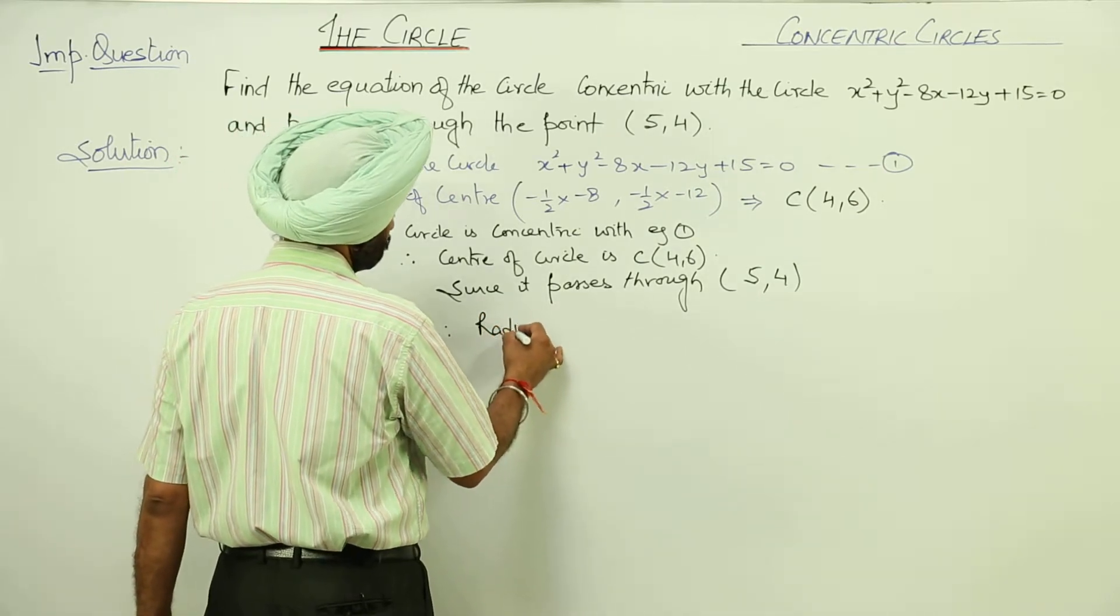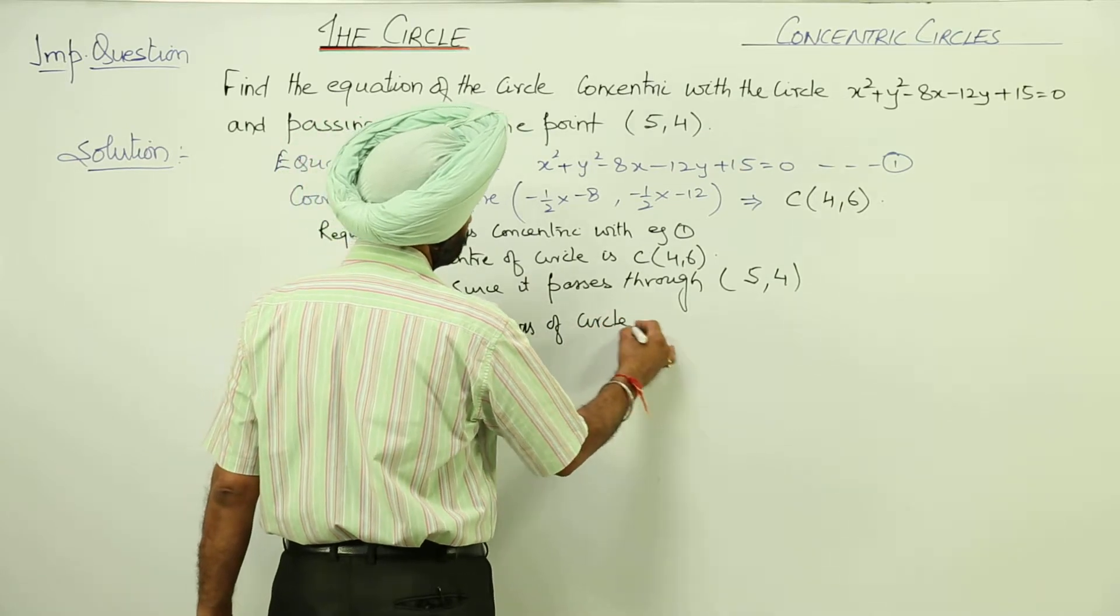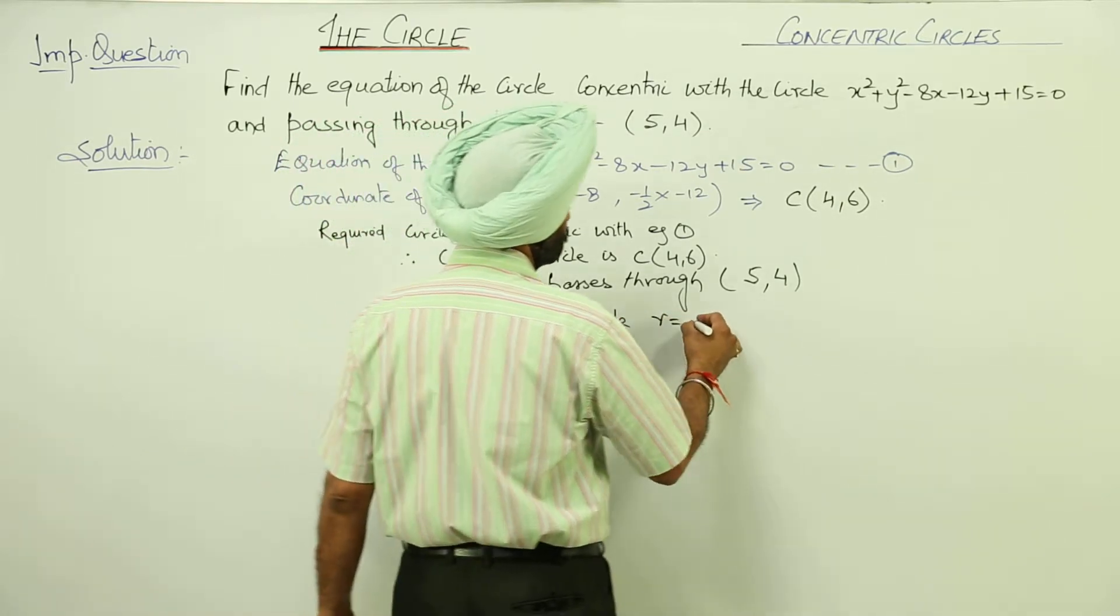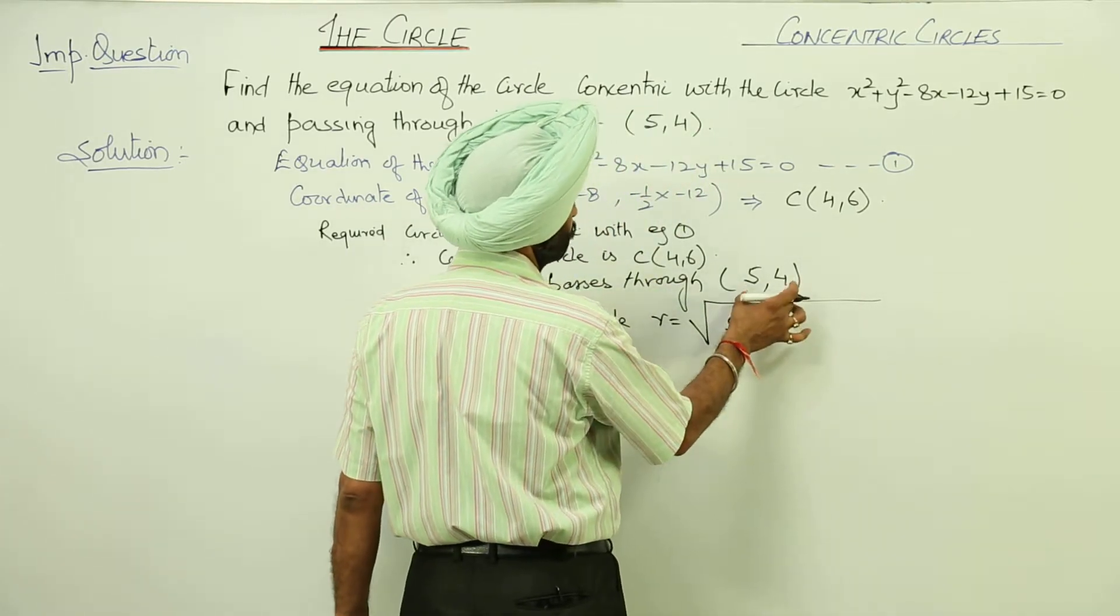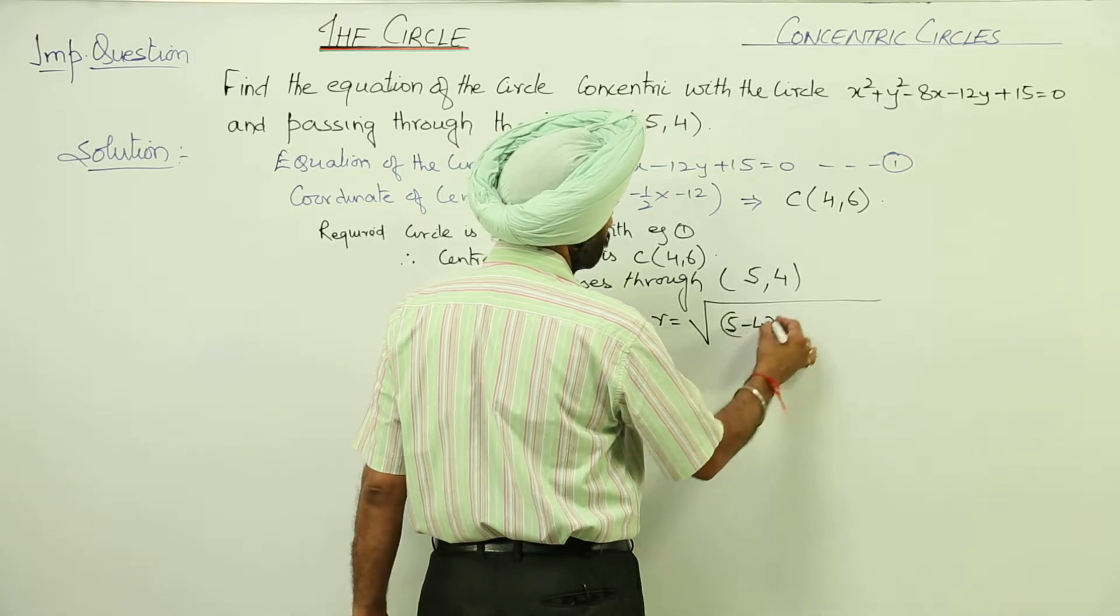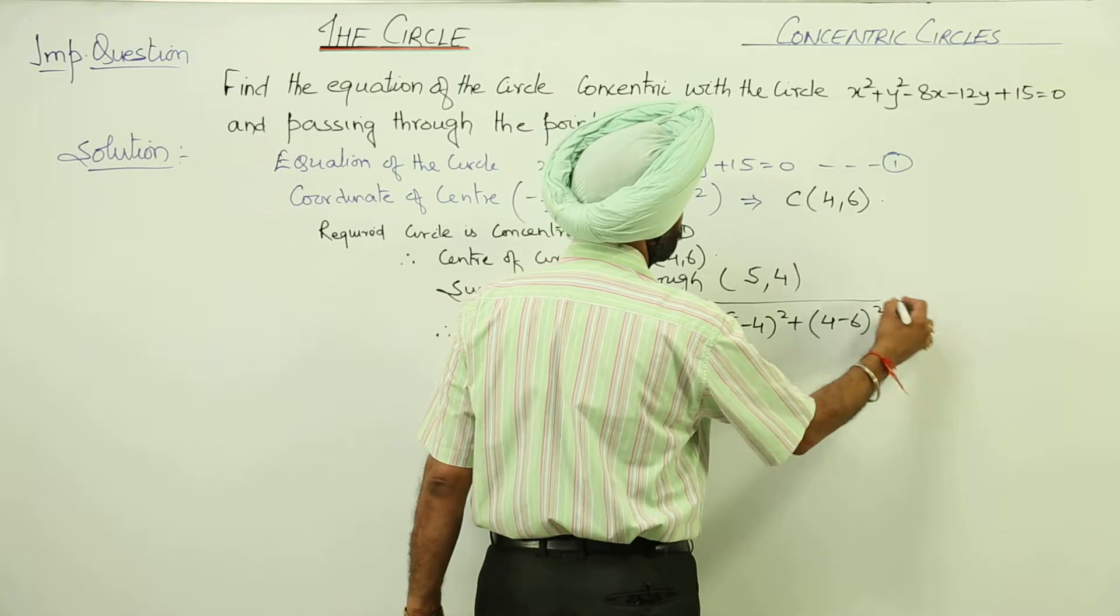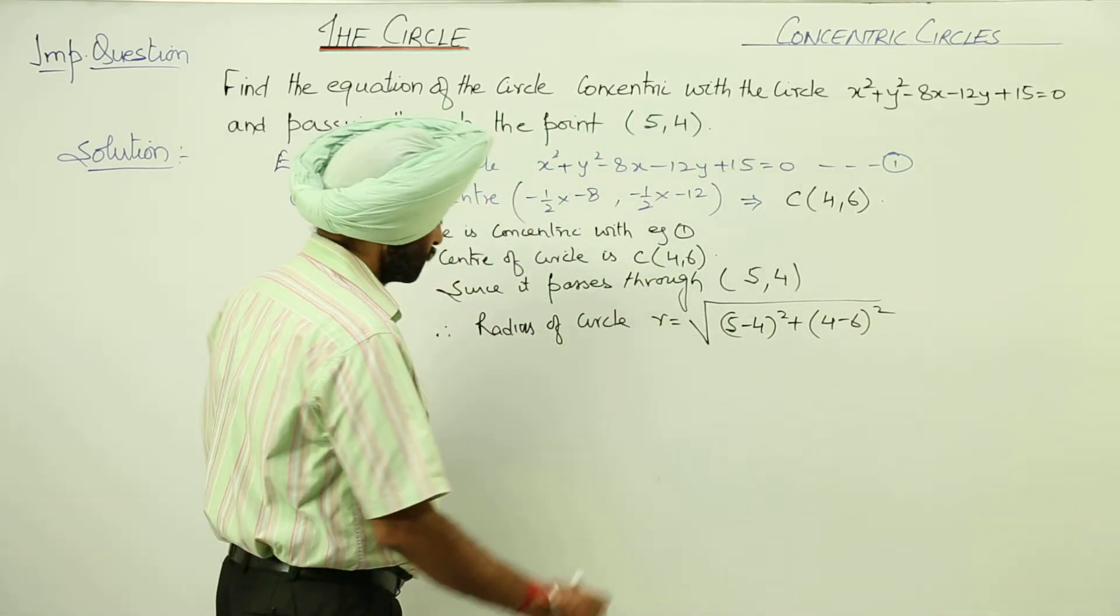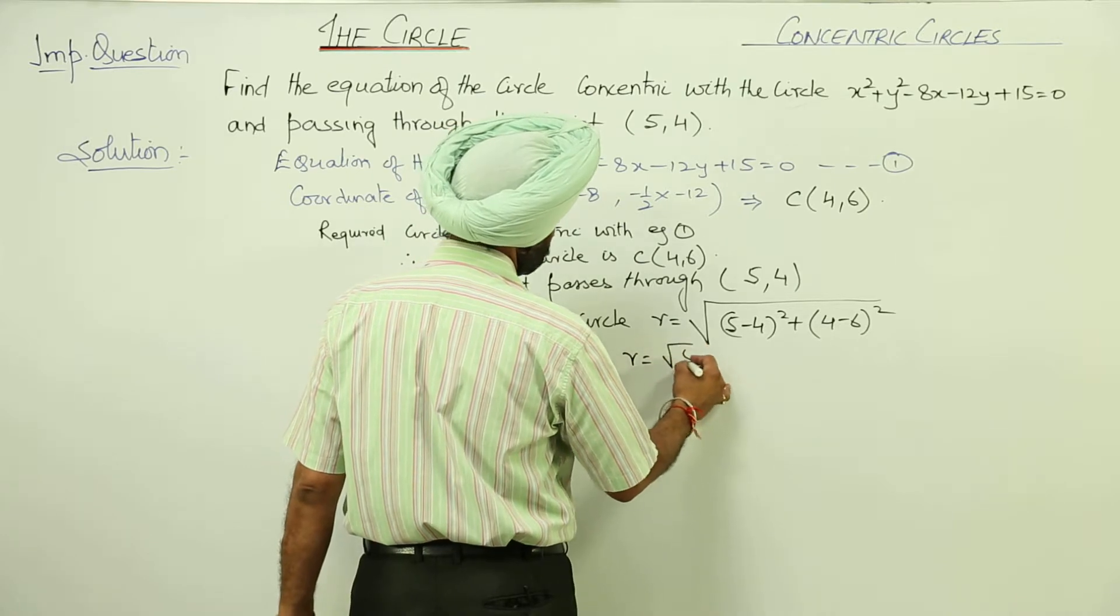Radius of circle r is equal to, using the distance formula between this point and this point: √[(5-4)² + (4-6)²]. We have r = √5.